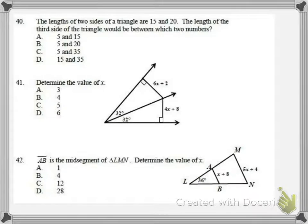Number 40. The lengths of the two sides are 15 and 20. What is the possible third side? Or what third side would they be between? Well, this one's kind of setting up for us. The difference would be 5. The sum would be 35. So it would be between 5 and 35.